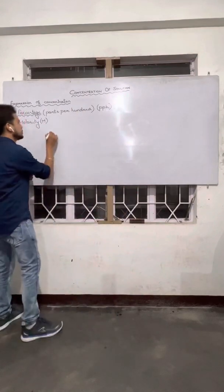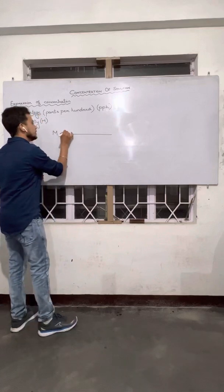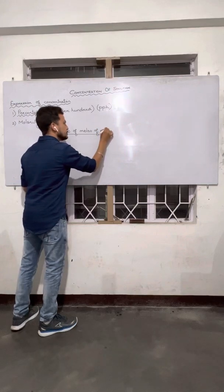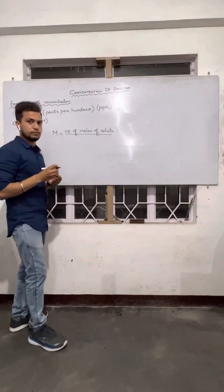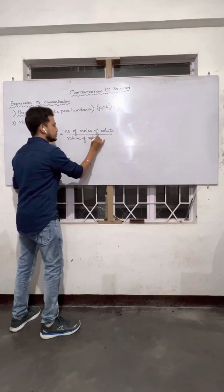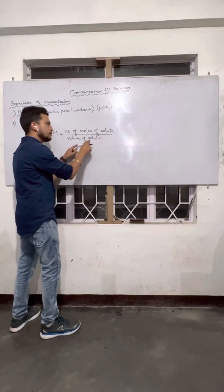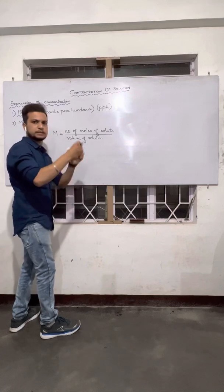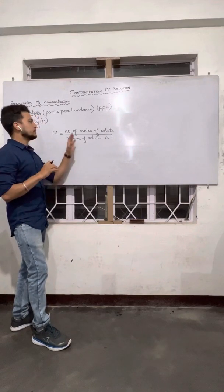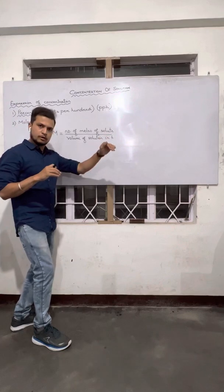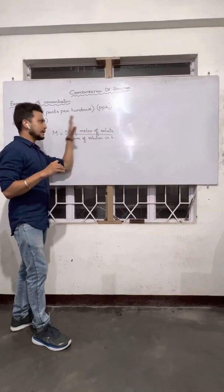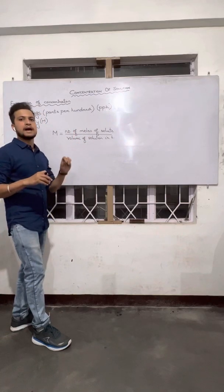Molarity is nothing but the number of moles of solute — so your solute has to be expressed in number of moles — divided by the volume of solution. Very important: it is the volume of the solution, meaning solute plus solvent, in liters. Whenever we talk about number of moles of solute and the ratio to volume of solution in liters, the value you get is known as molarity.